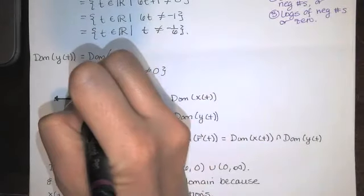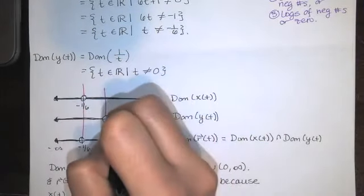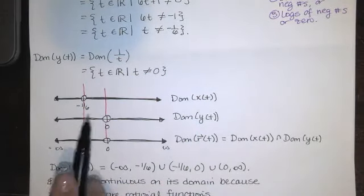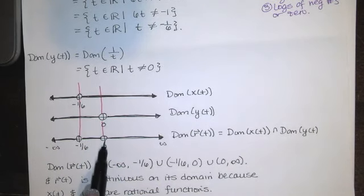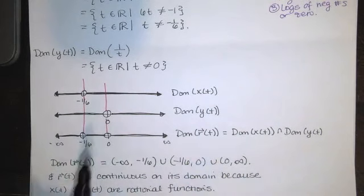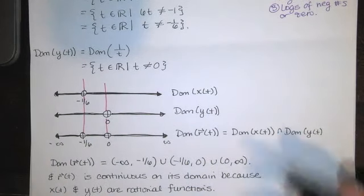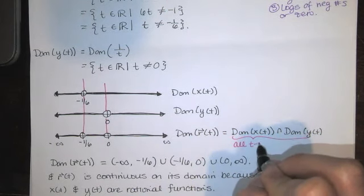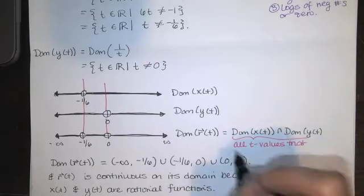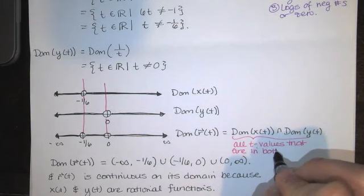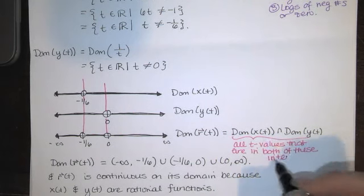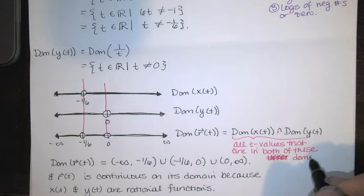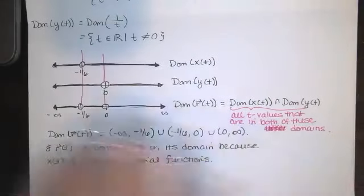Another way to see this last piece is on a number line. All the t values in both sets are included, but we skip -1/6 with an open circle, and all t values between -1/6 and 0 belong to both sets, but we skip 0, and all t values from 0 to infinity belong to both sets. We want all t values that are in both domains. Hope that helps — that's our answer. Please let me know if you have any questions.